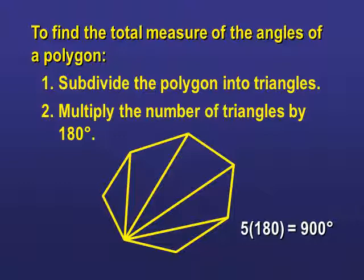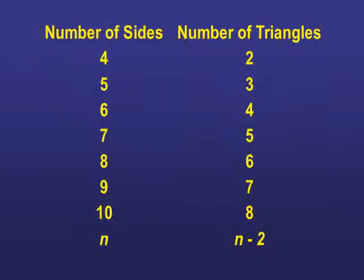There is a chart. There is actually a pattern to this. If I have a four-sided figure, which is a quadrilateral, I'm only going to be able to make two triangles. If I have a pentagon, whether it's regular or not, I'm only going to have three triangles. If you look at this pattern: six sides, four triangles; seven sides, five triangles; eight sides, six triangles. So it's however many sides you have, minus two, will give you how many triangles you can make.